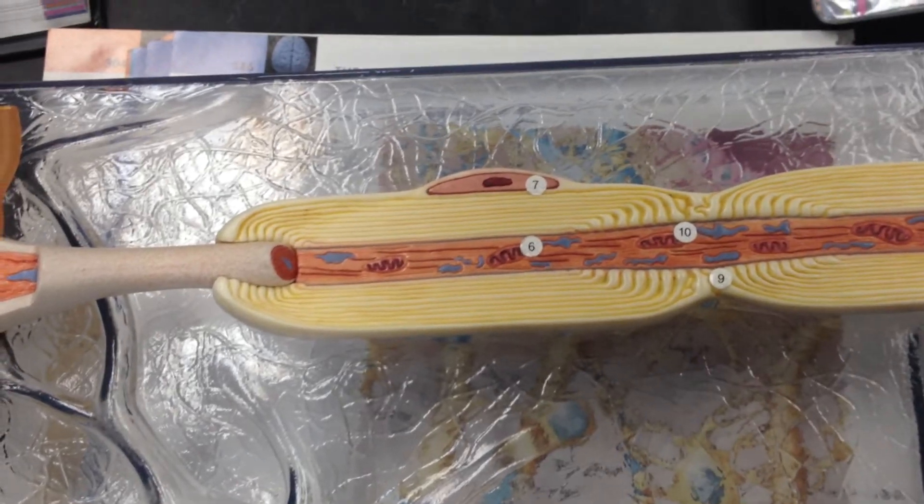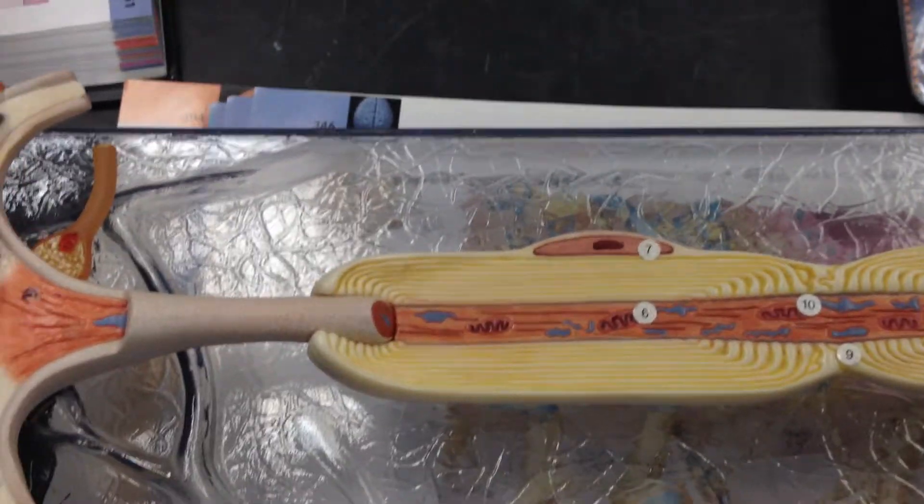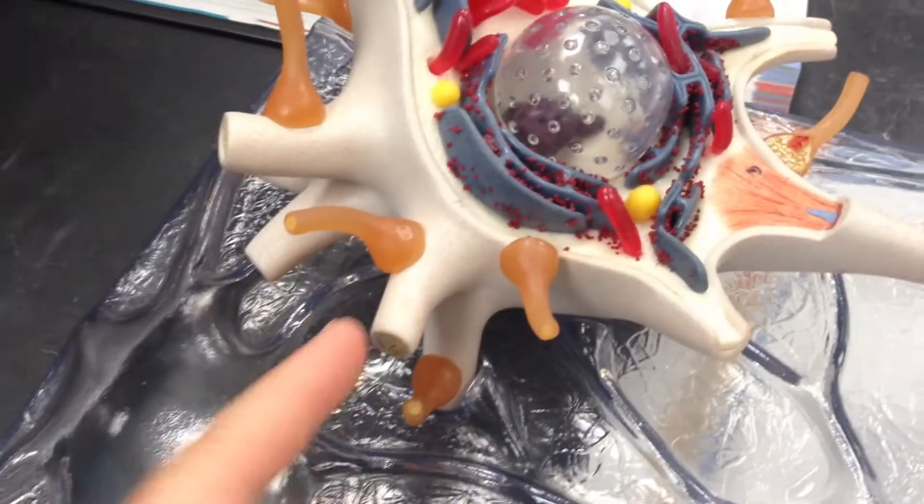And then the next is the neuron. And the dendrites are the neuron. Okay, the dendrites are here.